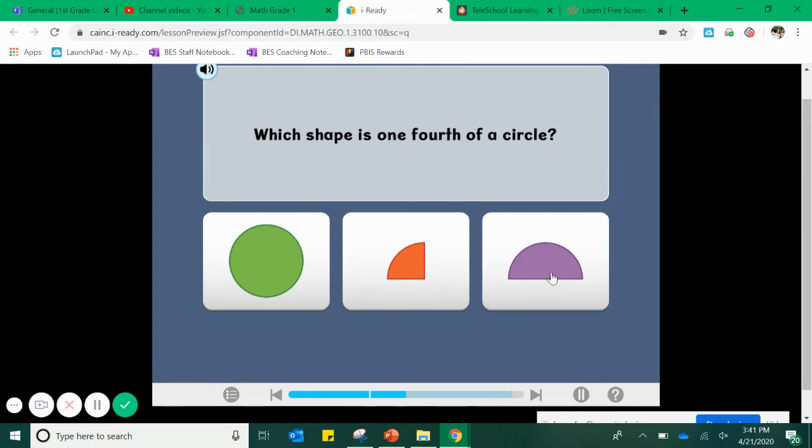Wait a minute. I saw this purple guy on Wednesday when we were talking about halves. This represents a half of a circle or some people call a semi-circle. That's a half. That's two equal parts of the circle. I want one fourth or one quarter of the whole circle. That's our orange piece. We call that a quarter circle.